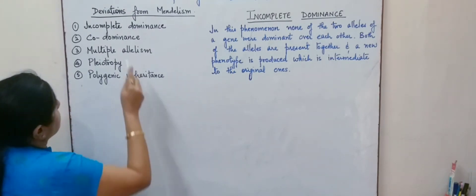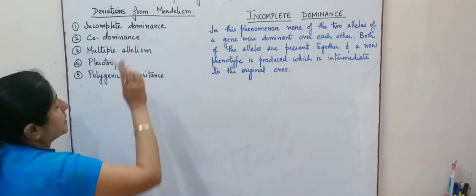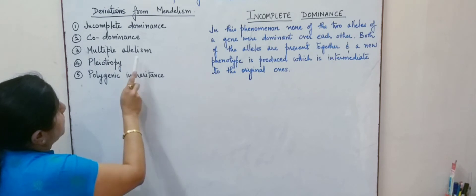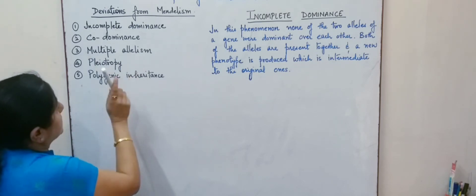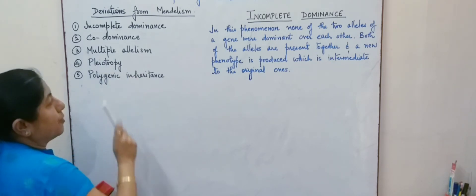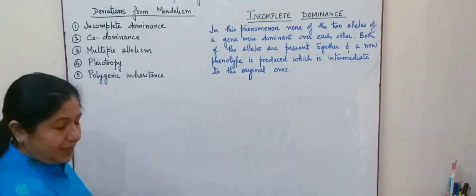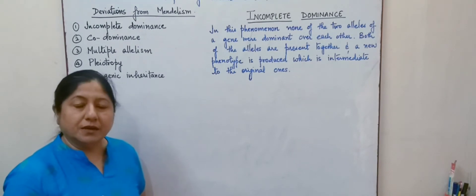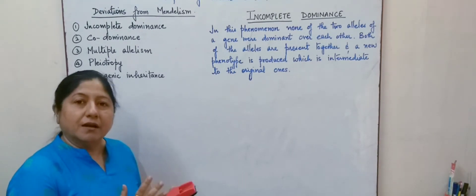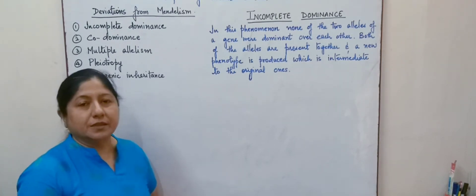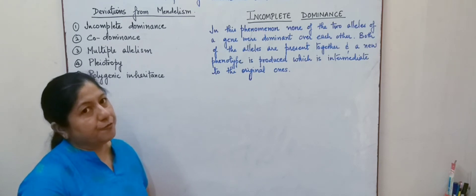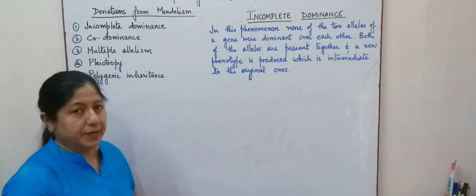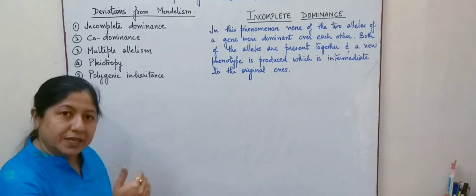The first deviation is incomplete dominance, followed by co-dominance, multiple allelism, pleiotropy, and polygenic inheritance. All these phenomena are actually not following the pattern or the rules laid by Mendel during his study.